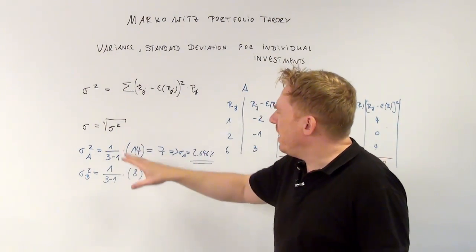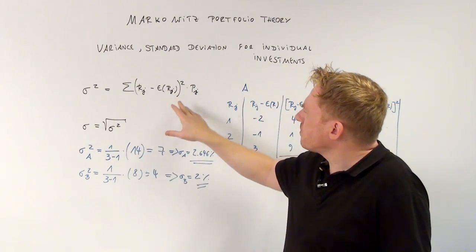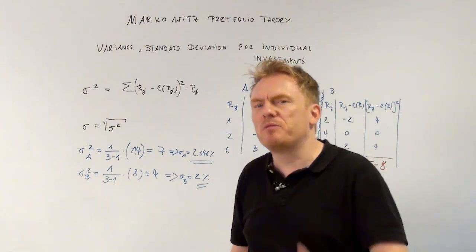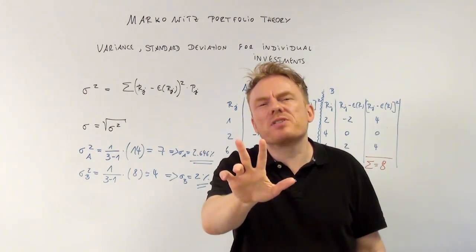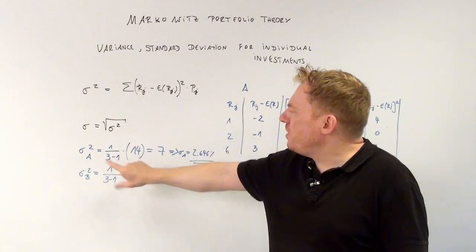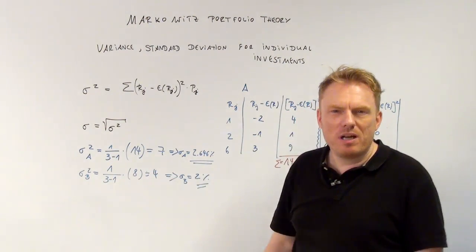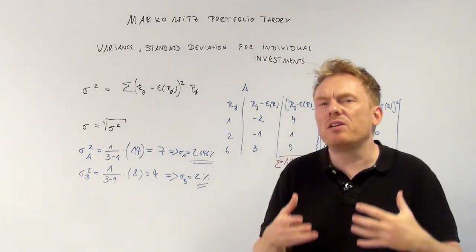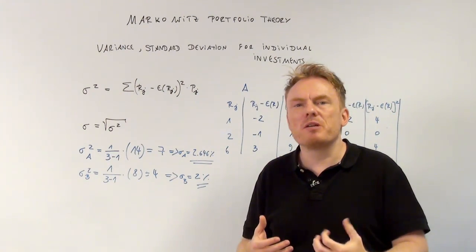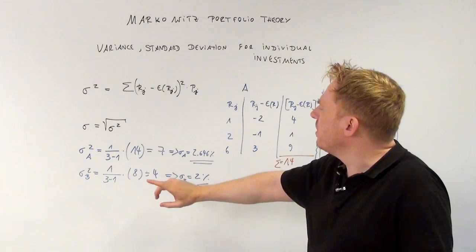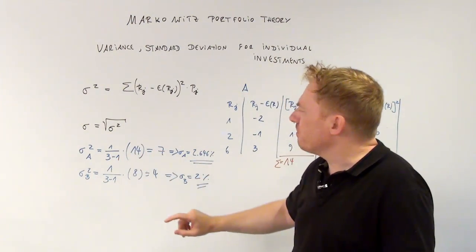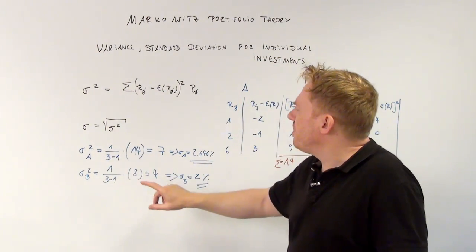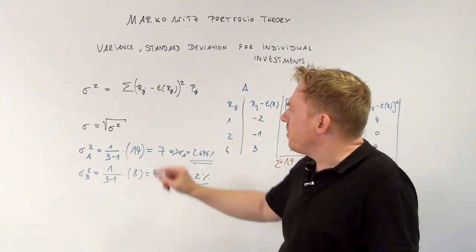We have fourteen, and normally we multiply with the probabilities of every single situation. But be careful: if we have three different situations, we divide by two, because we divide by n minus one. This is very important — if you have n different numbers, you need to divide by n minus one. So fourteen divided by two, not by three, gives us fourteen divided by two equal to seven.